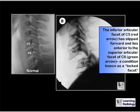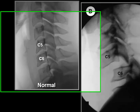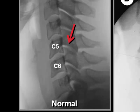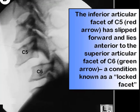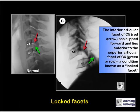In patient B, normally the inferior articulating facet of one vertebral body lies posterior to the superior articulating facet of the body below. In our case, the inferior articulating facet of C5 has slipped forward and lies anterior to the superior articulating facet of C6 — a condition known as a locked facet. Locked facets are usually associated with 50% or greater anterior slip of one vertebral body on another and are frequently associated with spinal cord damage.